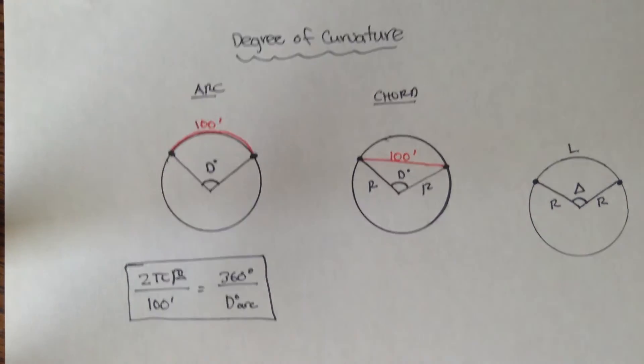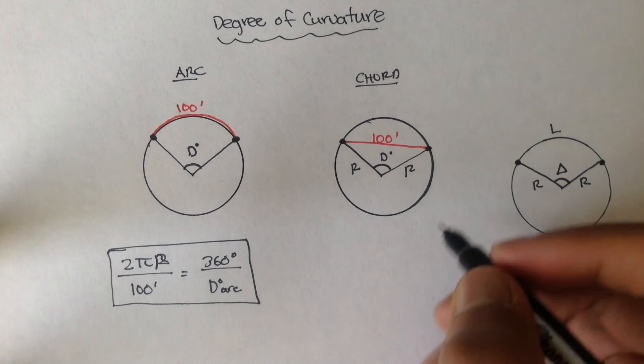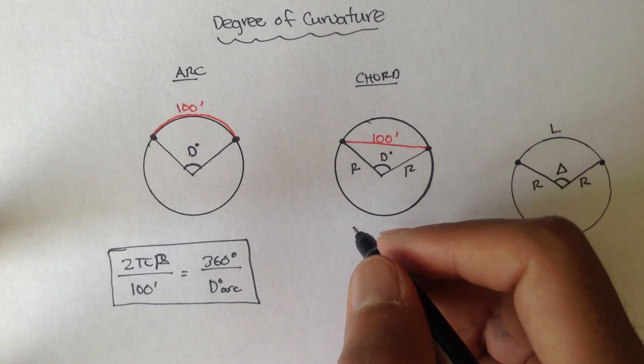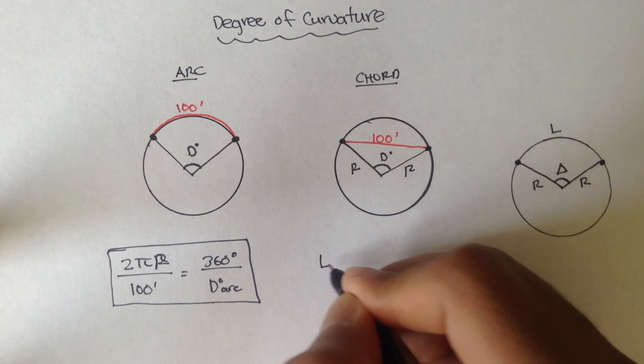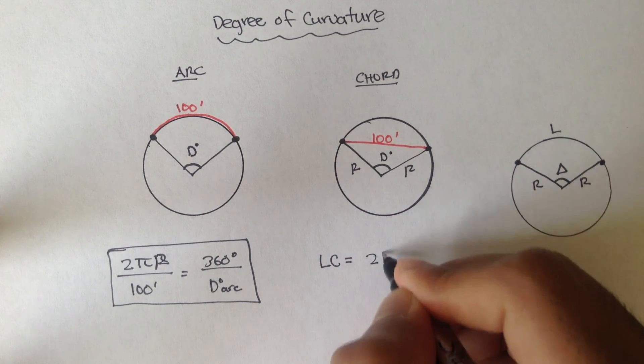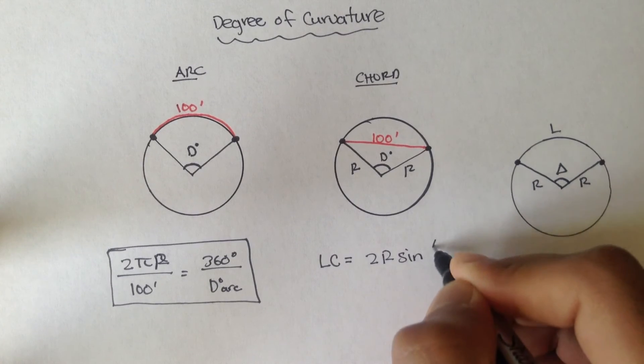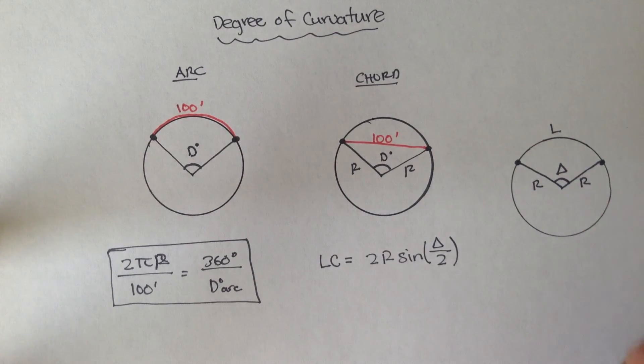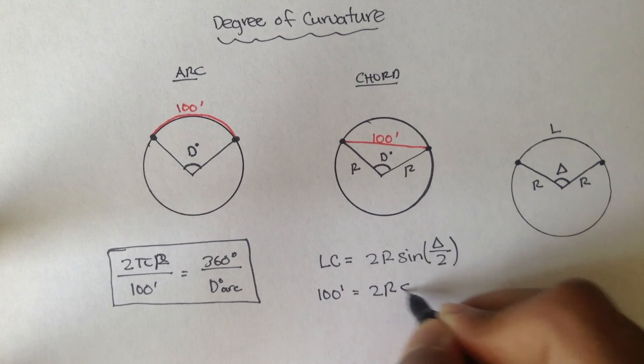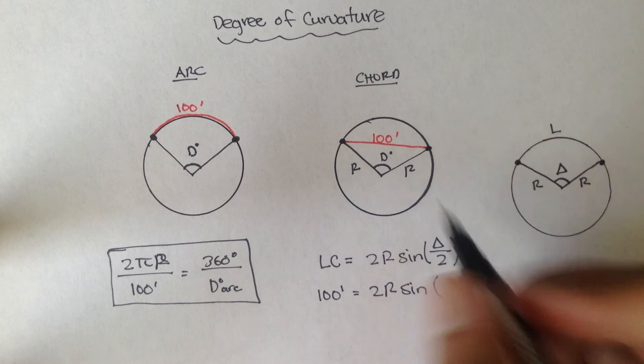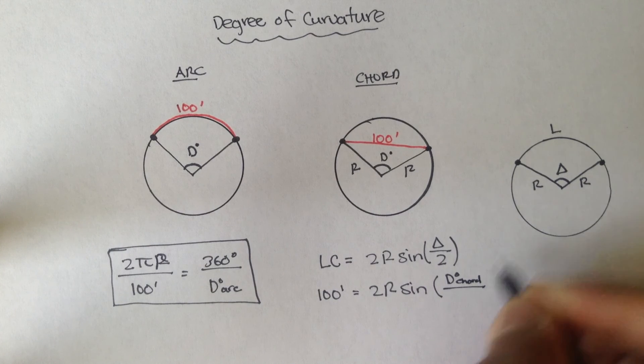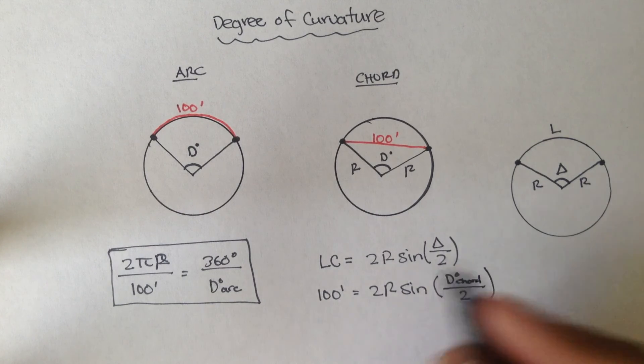And for chords, well, it's the same thing. We actually derived an equation, I believe, in the last video, or the video before. But we said that the long chord is equal to 2R sin(delta/2). In this case, our long chord is always 100 feet, 2R sine, and instead of delta, now it's a degree of chord over 2.